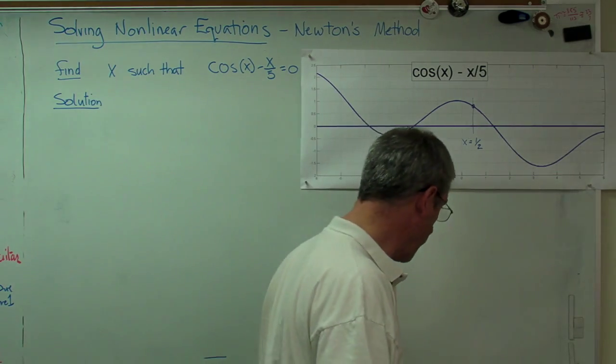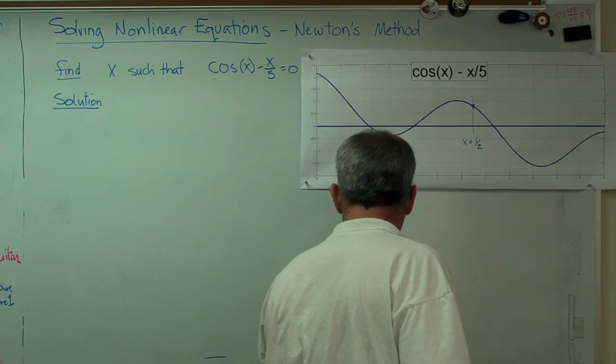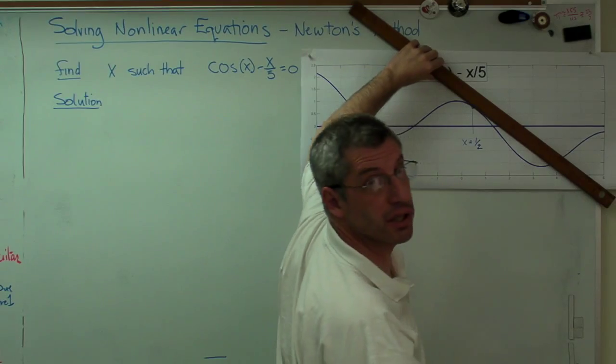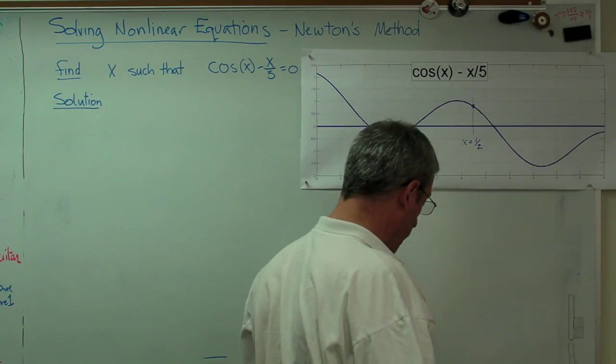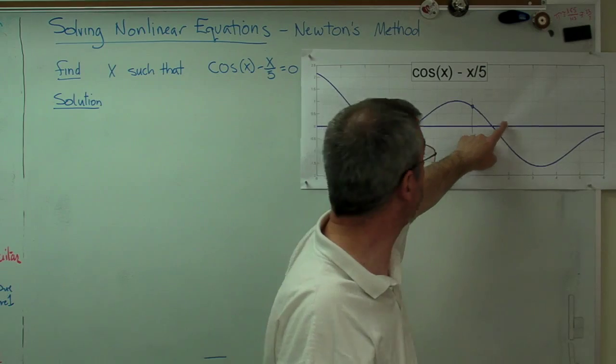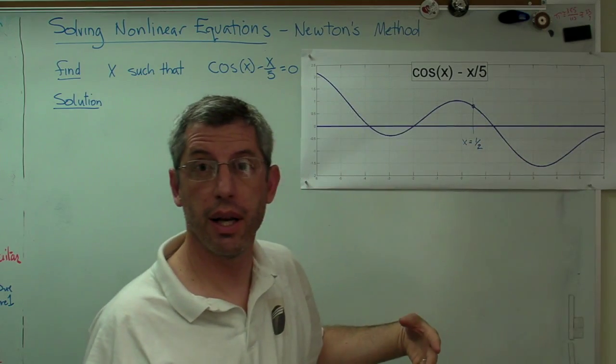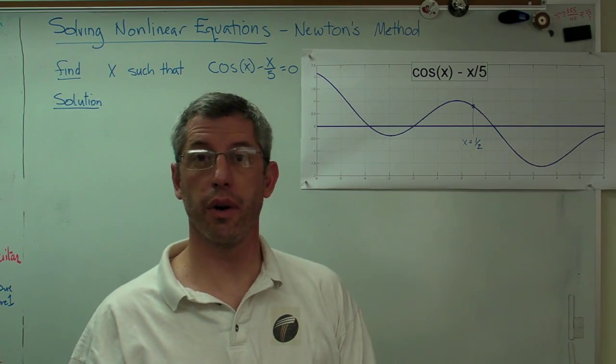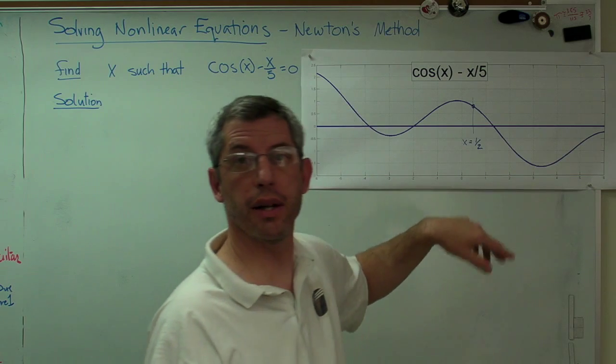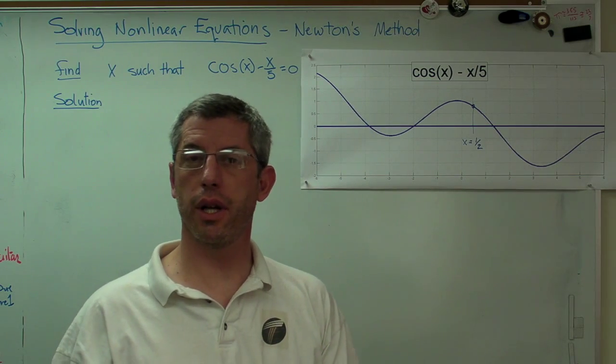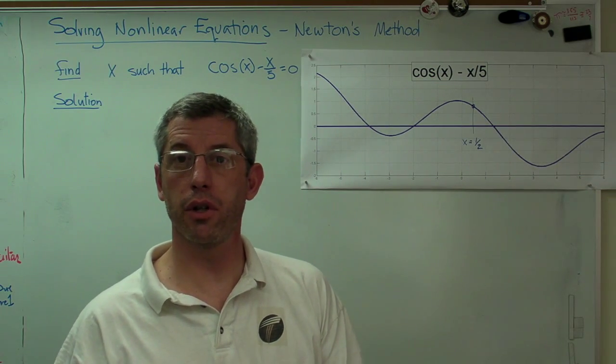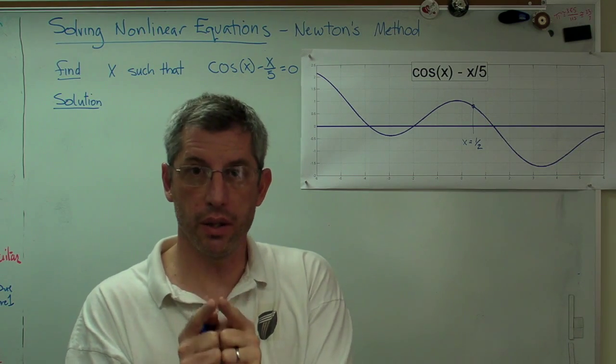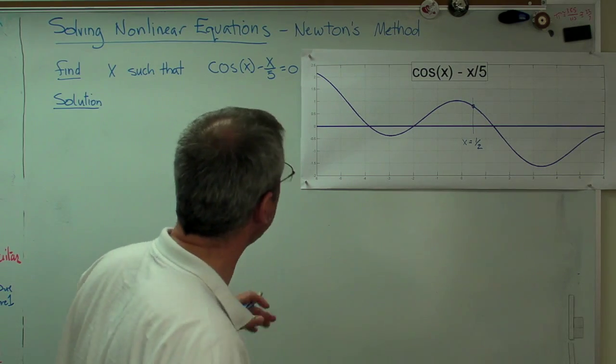So we're going to start at x equal one half. Now what we're going to do is we're going to make a tangent line to that function and we're going to see where it crosses the x-axis. Then we're going to evaluate the function at that point and if that function is far away from the x-axis we know we've got to do one more iteration. We'll draw another tangent line and we'll keep repeating that cycle until the tangent line is indistinguishable from the actual function. We're going to get closer and closer to the exact solution. All right so that's the game we're going to play here.